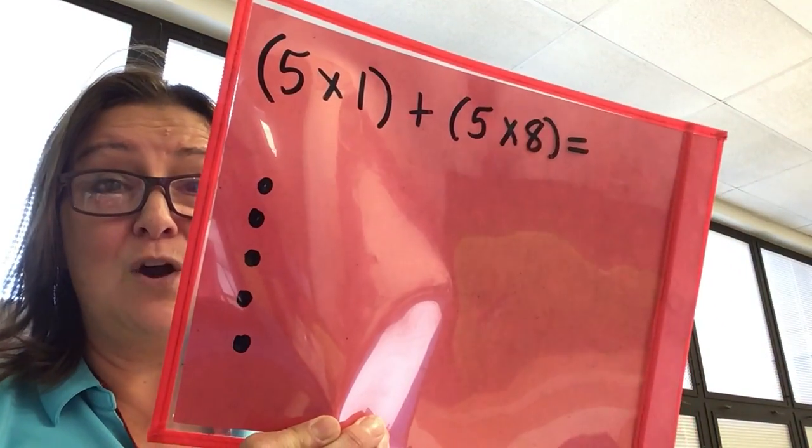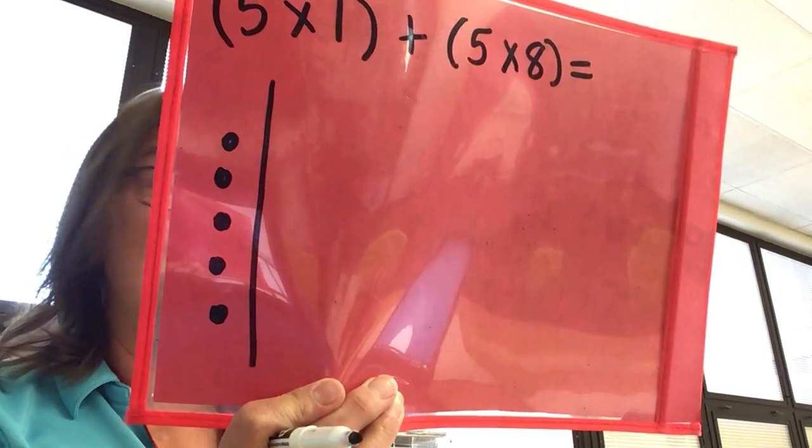Okay so I'm gonna draw my first array. That one's really simple. It's just five rows with one in each row. Then I'm gonna draw a line like this to help me see that I'm drawing my second array. My second array also has five rows and eight in each row. It's gonna take me a little longer to draw.